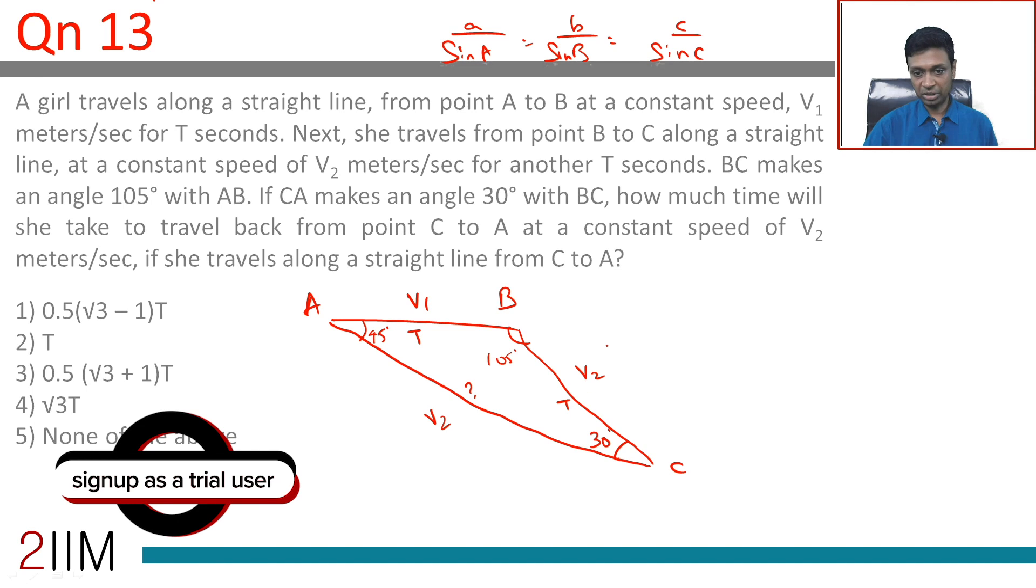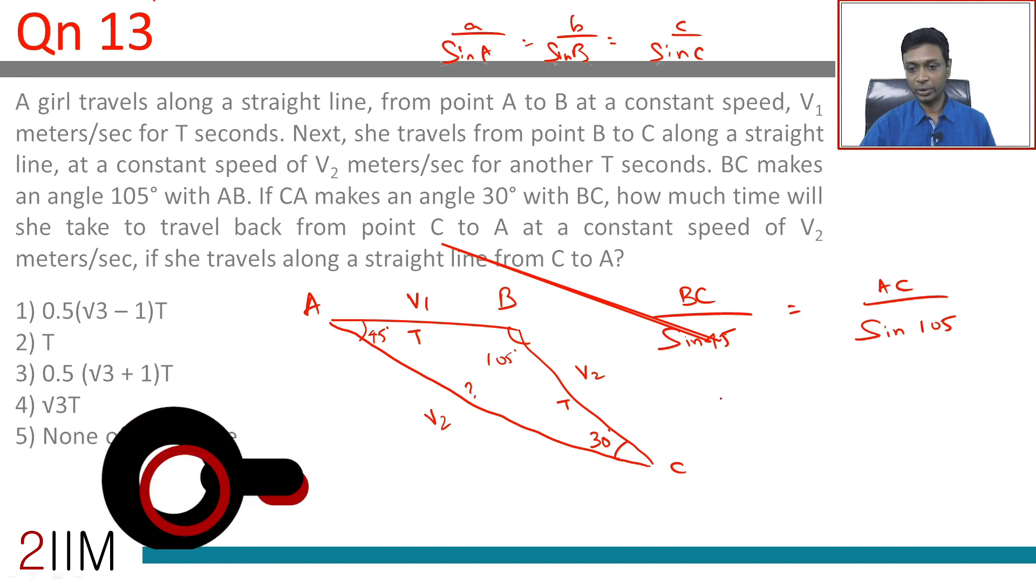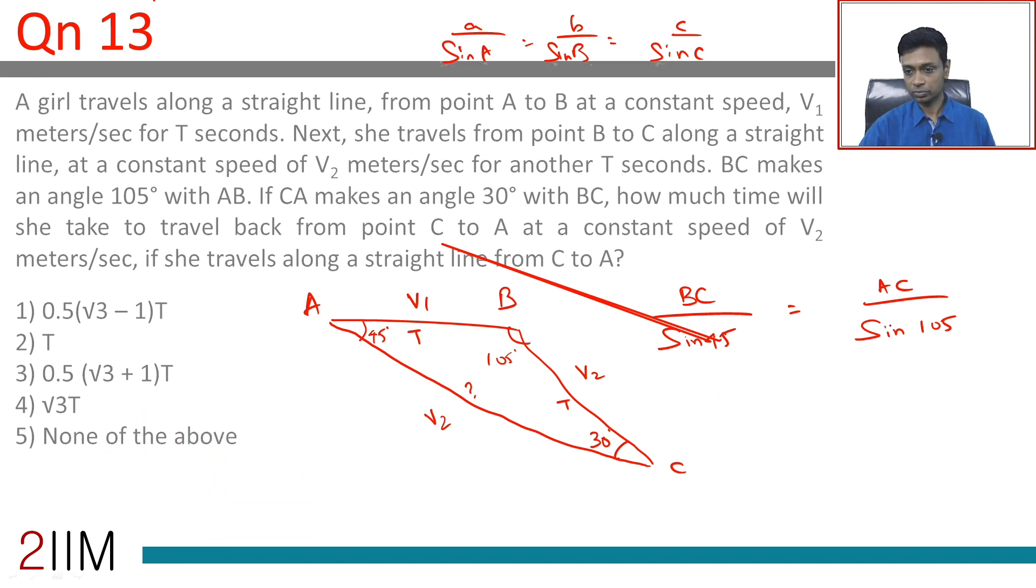So we take BC, the distance BC by sin 45 which is sin A equals AC by sin 105. So we need to find AC or BC into sin 105 by sin 45 equals AC.